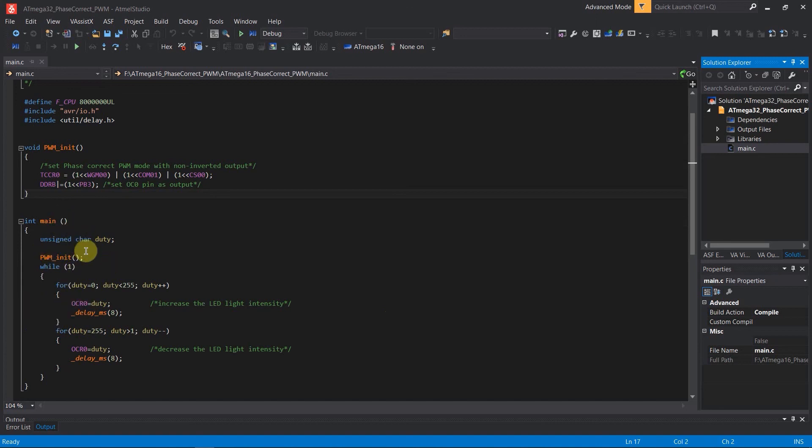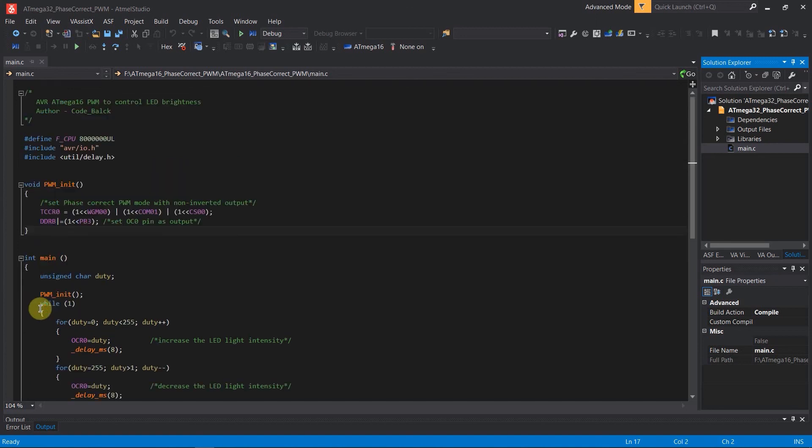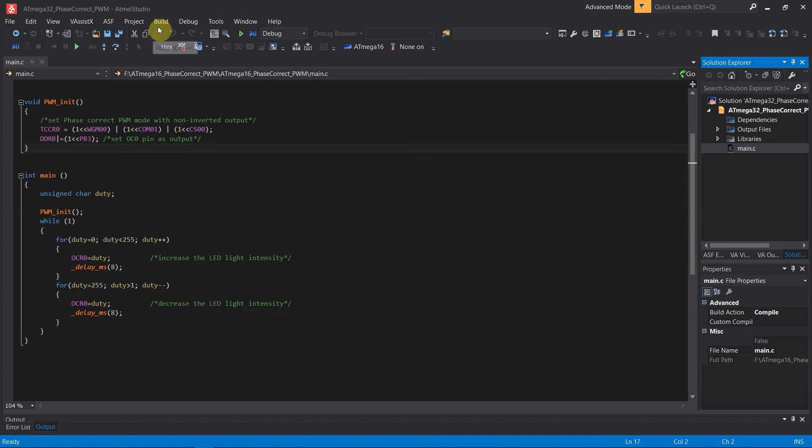As I explained before, I have written the code to control the brightness of the LED bulb. This code is simple. It contains two major parts: the PWM initiation and the main function. We are using an unsigned char known as duty. We are defining the frequency of CPU as 8 MHz and using the AVR input-output header and the utility delay header. Now, let's compile this project. As you can see, the build succeeded and we have no errors in our code. We can proceed further in building our circuit.